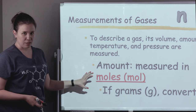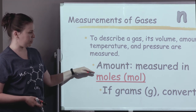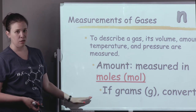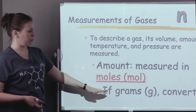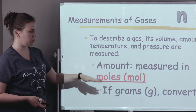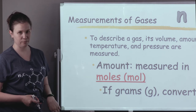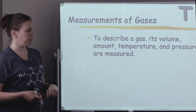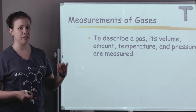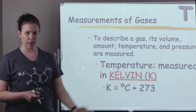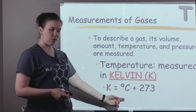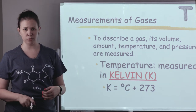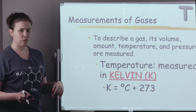One problem that sometimes comes up is that although we need to plug moles into the formula, they may give you grams. But fortunately, we are pretty much pros at converting grams to moles using our molar mass. Next, we have T for temperature. The thing is, it has to be in Kelvin. So sometimes they might give you Celsius, and you're going to have to add 273 — or more precisely 273.15 — in order to convert to Kelvin.